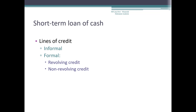Installment credit is repaid with a fixed number of scheduled payments. Commercial paper consists of short-term debt securities used by large companies to finance short-term assets, commonly by finance companies offering short-term consumer credit.